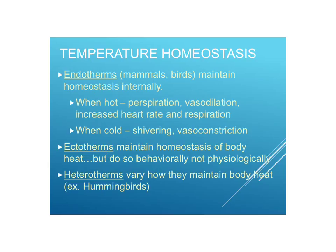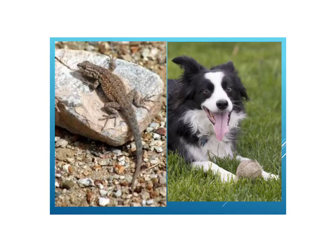Ectotherms maintain homeostasis behaviorally instead of physiologically. An ectotherm would go sit on a rock to warm up, or hide in the shade to cool down. Heterotherms can vary how they maintain their body heat — they can vary between ectotherm and endotherm. An example of a heterotherm is hummingbirds. Here are a couple of ways that organisms could maintain homeostasis of temperature.